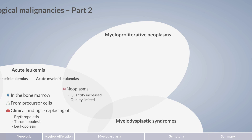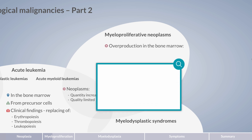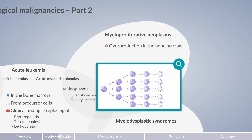In myeloproliferative neoplasms, there is an overproduction of cells in the bone marrow — the cell proliferation rate is increased and more cells are present. However, the cells follow their normal differentiation course. Using neutrophils as an example, the myeloblast divides rapidly but still develops through its intermediate forms to mature granulocytes. Like the leukemias, there are quantitatively more cells present; however, maturation continues.